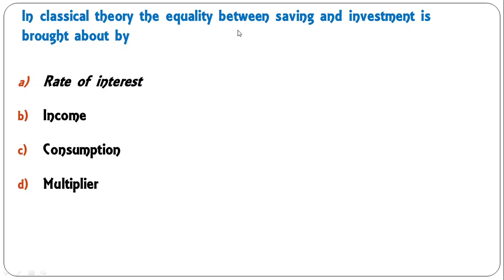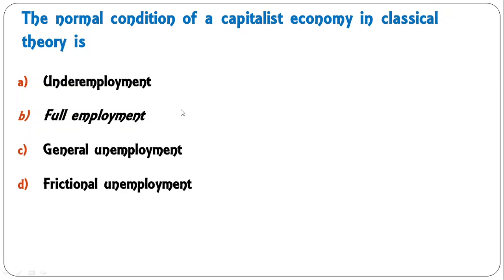Next question: in classical theory, the equality between saving and investment is brought about by rate of interest, income, consumption, or multiplier? The correct answer is rate of interest — it is the rate of interest which equalizes saving and investment in classical theory. Third question: the normal condition of a capitalist economy in classical theory is under employment, full employment, general unemployment, or frictional unemployment? The correct answer is full employment.